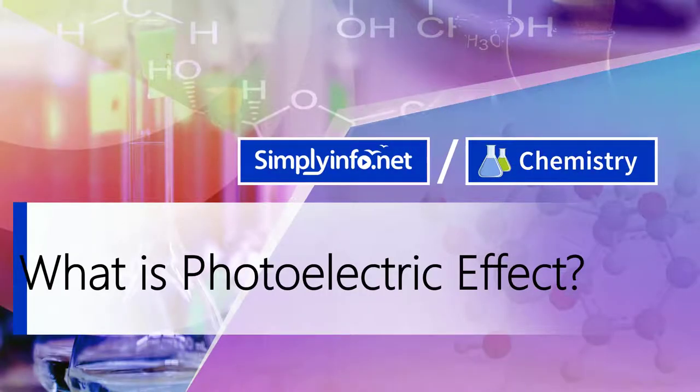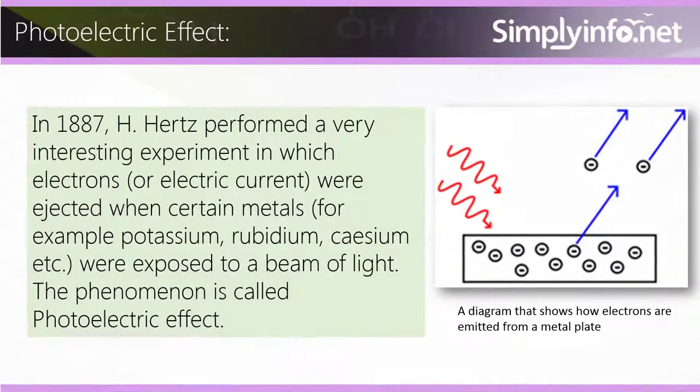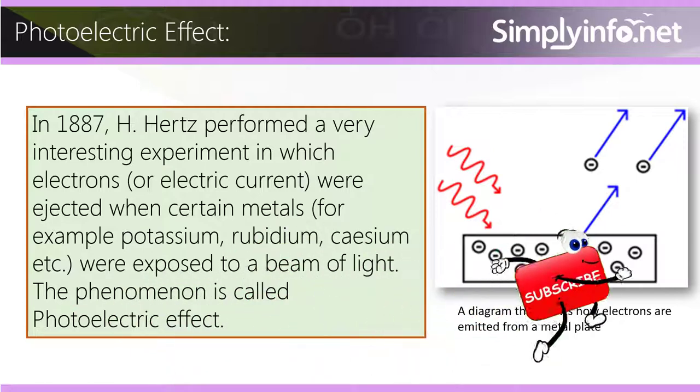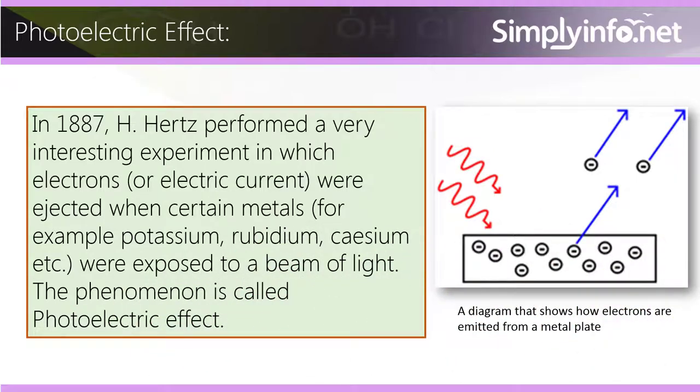What is photoelectric effect? In 1887, H. Hertz performed a very interesting experiment in which electrons (or electric current) were ejected when certain metals - for example, potassium, rubidium, cesium, etc. - were exposed to a beam of light. The phenomenon is called photoelectric effect.